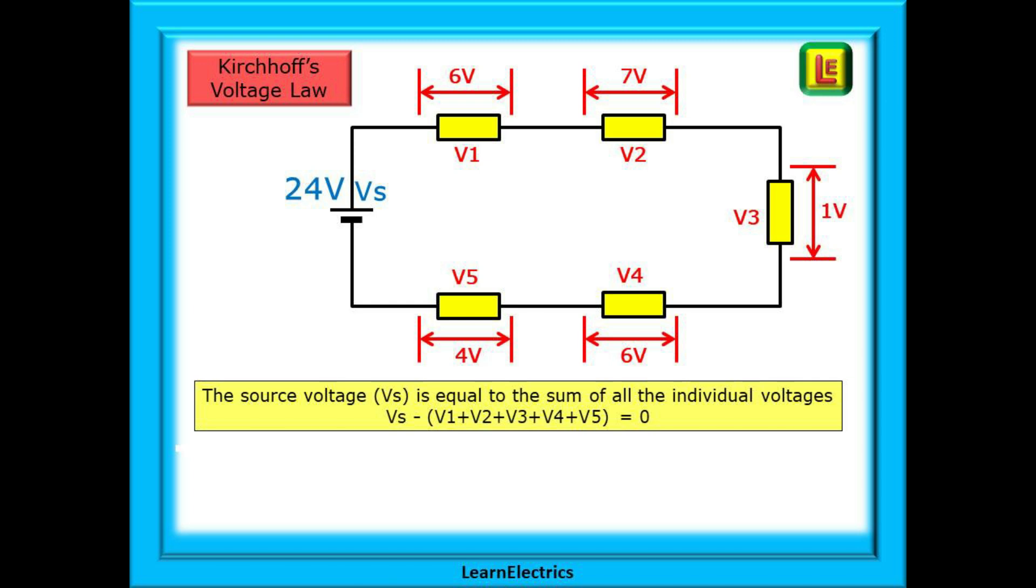In our example, the source voltage is 24 volts. If we add up V1, V2, etc., we also have 24 volts. 24 volts minus 24 volts equals zero, as we expected.